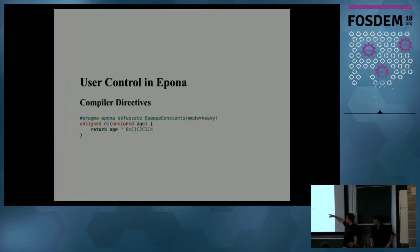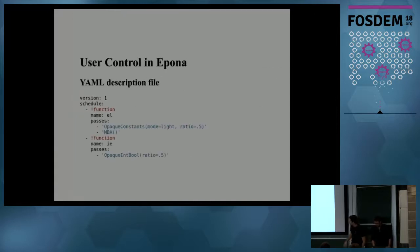So you can use directives, so you say, okay, you're going to obfuscate this very function with this very obfuscation and this parameter. And then this constant will be obfuscated using the heavy mode which regenerates more code. But you can also write a schedule file because it doesn't want to touch its file, so everything is put into a separate file with the very same options and you will apply this pass, then this pass on this function, and this pass on this function.